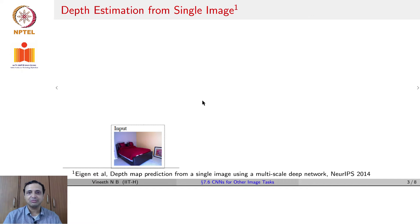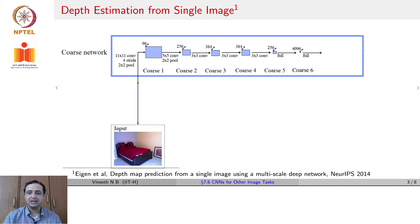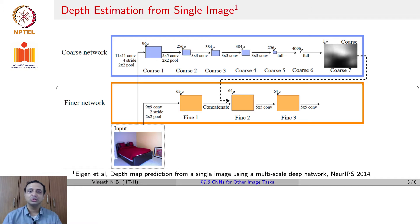One of the earliest efforts of using deep CNNs for depth estimation was in NeurIPS 2014, where given an input, a coarse level CNN is used to forward propagate the image, and then at the end of the last layer, get a pixel level estimate of the depth for each pixel in the image.